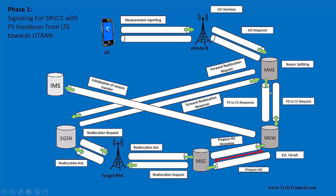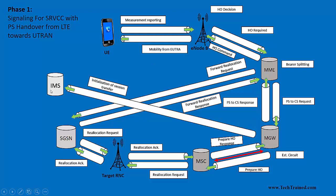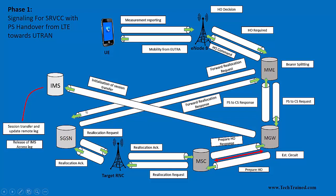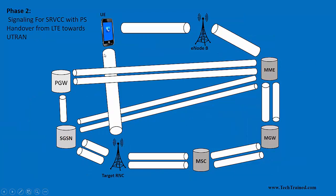The media gateway then sends the PS-to-CS response back towards the MME, corresponding to the original PS-to-CS request. Once MME receives this response, it forwards the Handover Response back towards the eNodeB. The eNodeB then sends a mobility information command towards the UE, telling it to tune towards UMTS. Meanwhile, IMS is getting ready to transfer the session — updating its remote leg and releasing the IMS access leg from LTE to transfer it towards the UMTS side. This concludes phase one.